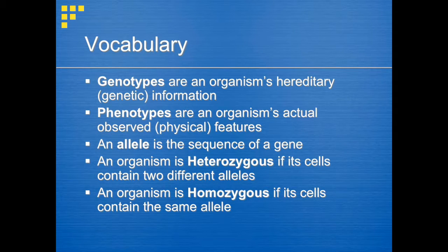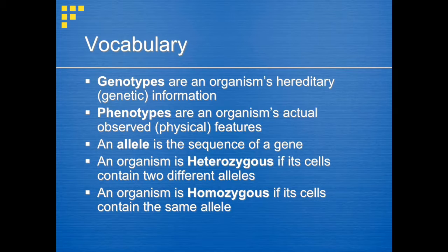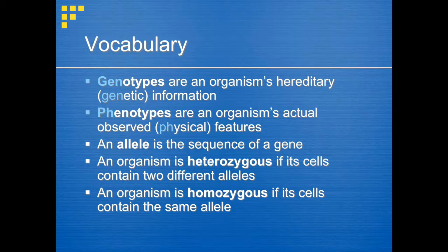Let's go through some terms before we get too far into the Punnett squares discussion. Genotypes are an organism's hereditary information. Phenotypes are the organism's actual observed features. An allele is the sequence of a gene. We can say an organism is heterozygous if its cells contain two different alleles, and homozygous if its cells contain the same allele. It's easy to remember the difference: genotypes are for genetics and phenotypes are for physical features.